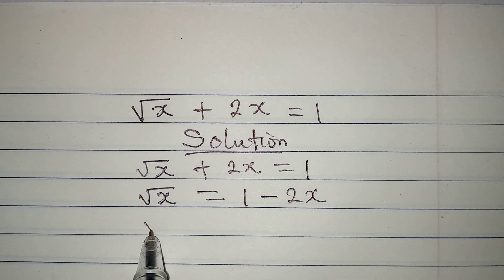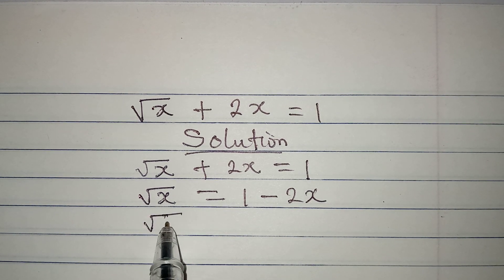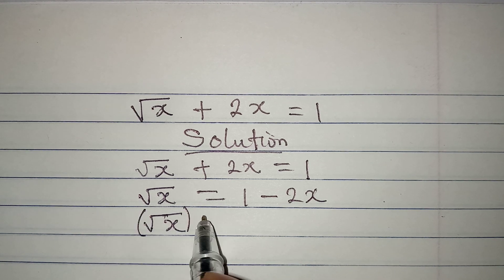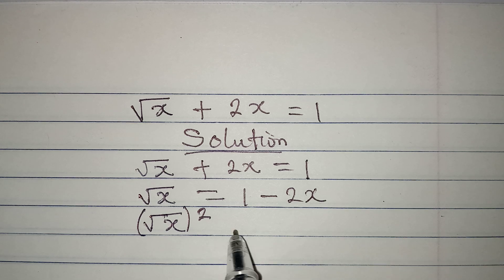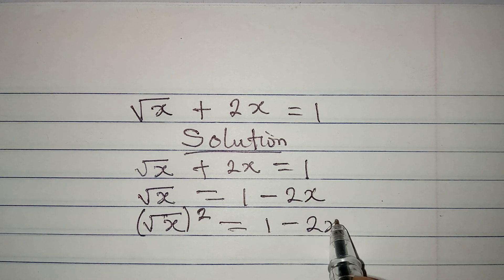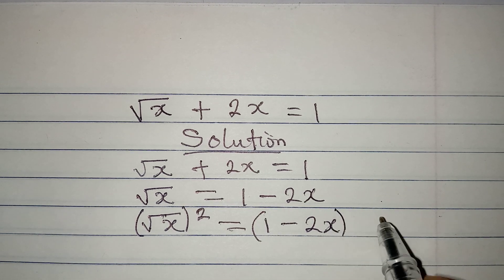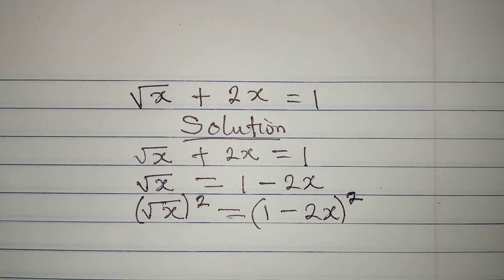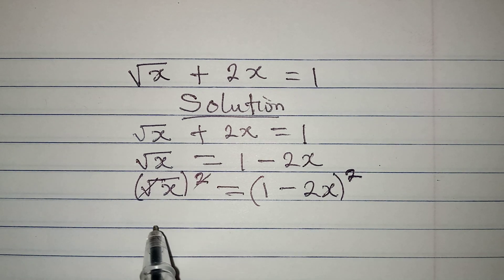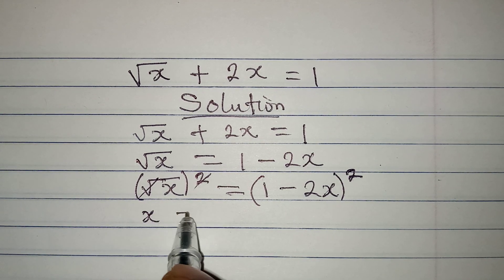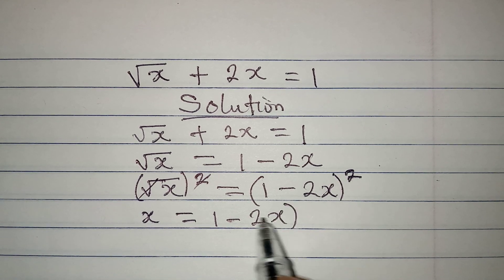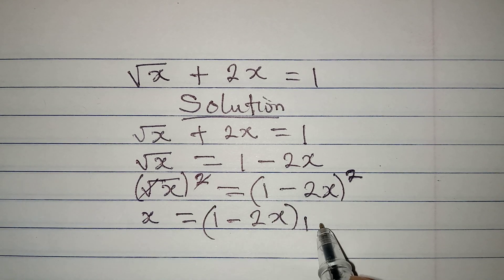The next thing is to remove this square root, and we can do that by squaring it. This will be equal to (1 minus 2x) whole squared. This and this can cancel so that x will be equal to (1 minus 2x)(1 minus 2x).